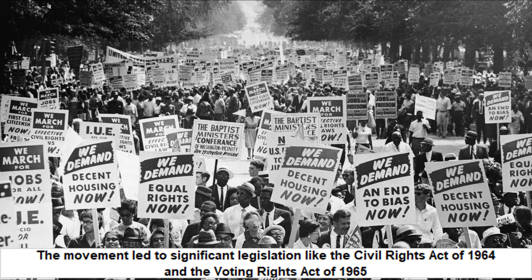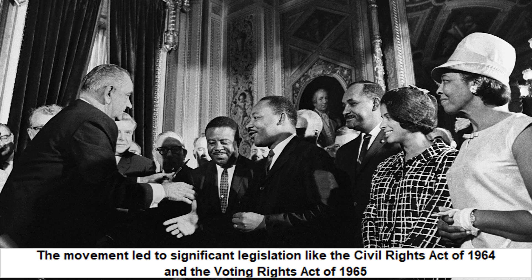The efforts of the Civil Rights Movement resulted in significant legal victories. The Civil Rights Act of 1964 banned discrimination based on race, color, religion, sex, or national origin and ended segregation in public places. The Voting Rights Act of 1965 removed barriers to voting for African Americans, such as literacy tests and poll taxes.